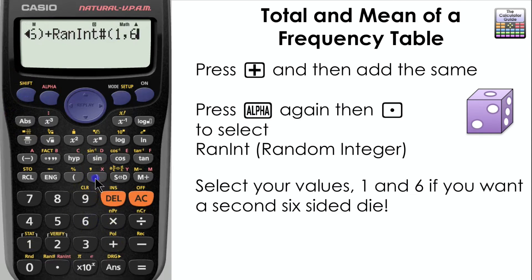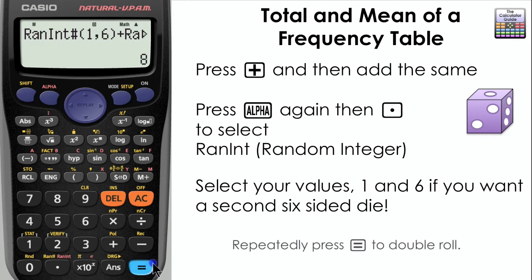So alpha, then the point or period, select random integer, 1 to 6, and then repeatedly press equals to get your double roll.